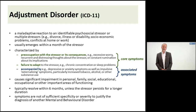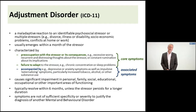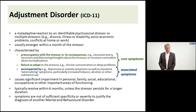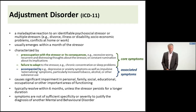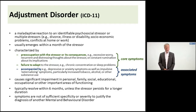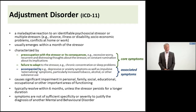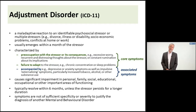Here is the first part of the new adjustment disorder definition. It's a maladaptive reaction to an identifiable psychosocial stressor or multiple stressors. In ICD-11, there are given a lot of examples like divorce, illness, or disability. It usually emerges within a month of the stressor. The main symptoms described are: preoccupation with the stressor or its consequences — for example, excessive worry, recurrent and distressing thoughts about the stressor, or constant rumination about its implications — and secondly, failure to adapt to the stressor, for instance chronic concentration or sleep problems. These two symptom groups are the core symptoms of the new definition.